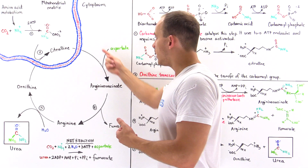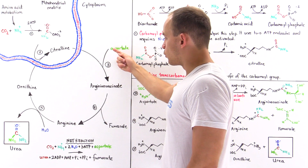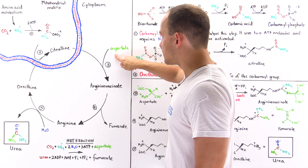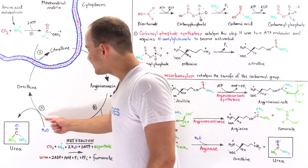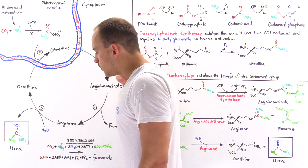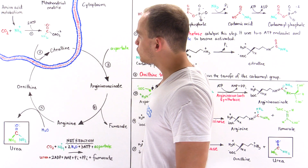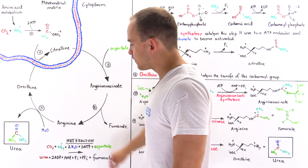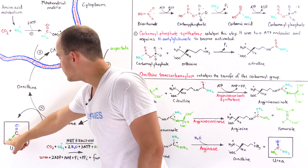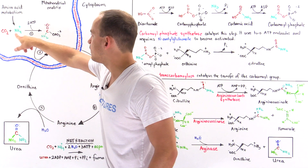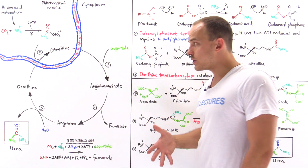We recycle the carbon skeleton of aspartate to fumarate and use it to form glucose via gluconeogenesis, while the nitrogen-containing group stays on the molecule to form arginine. In step five, arginine is hydrolyzed using a water molecule, removing the urea and regenerating ornithine, which is recycled back into the mitochondrial matrix. The oxygen in urea came from water, the carbon from CO₂, one nitrogen from aspartate, and the other from free ammonium. The urea then moves via the bloodstream to the kidneys and is excreted via urine.